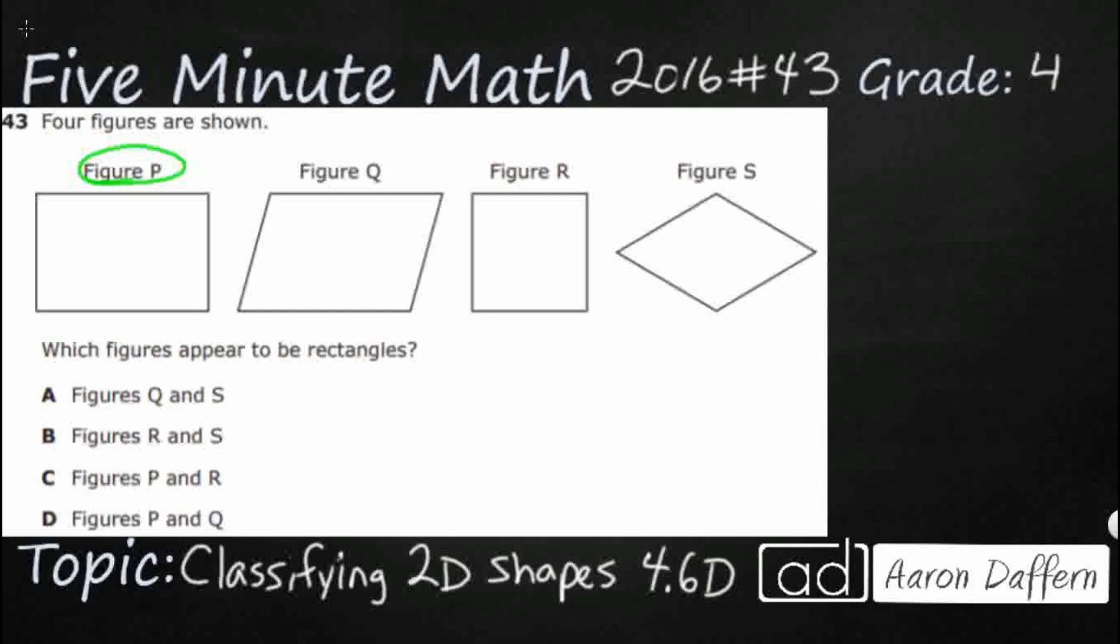Make sure we understand what the actual definitions for these shapes are. So let's start with our biggest type of category that we can look at here. Since these are all four-sided shapes, quadrilaterals are four-sided polygons. To be exact, that means they are closed, they have straight lines. So I'm going to make a little table here.